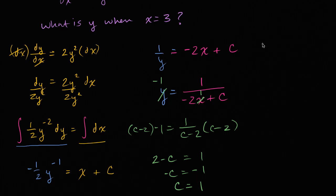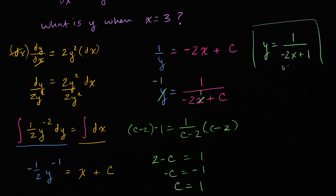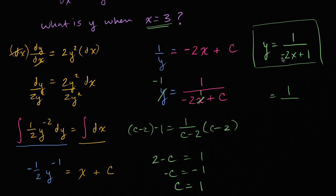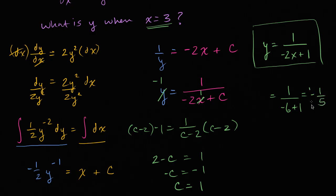So our particular solution is y is equal to one over negative two x plus one. We didn't just ask for the particular solution — we also need y when x is equal to three. So y is going to be equal to one over negative two times three plus one, which is one over negative six plus one, which equals one over negative five, or negative one fifth. And we are done.